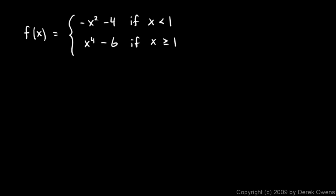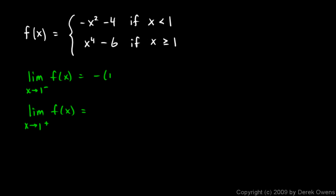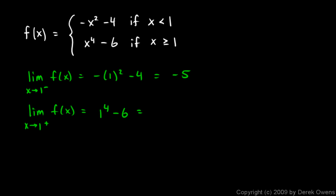One more example: f(x) = -x² - 4 if x < 1, and x⁴ - 6 if x ≥ 1. Is this function continuous at x = 1? The limit from the left: x approaching 1 from the left uses -x² - 4, giving -(1²) - 4 = -1 - 4 = -5. Be careful — we square first, then apply the negative sign. From the right: 1⁴ - 6 = 1 - 6 = -5.